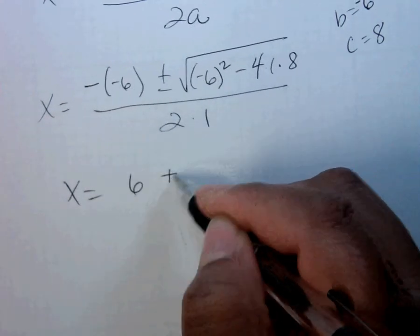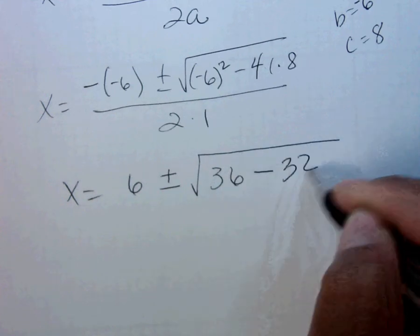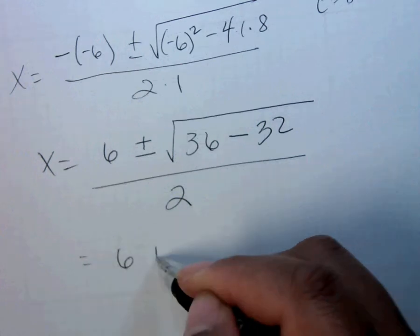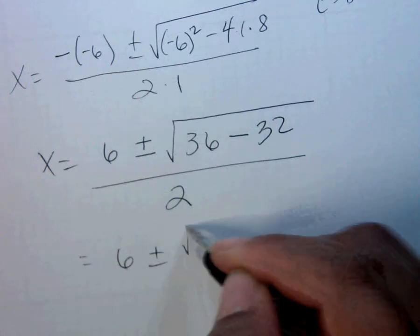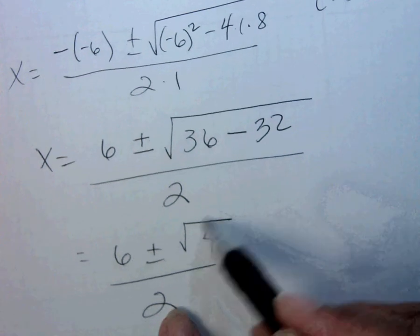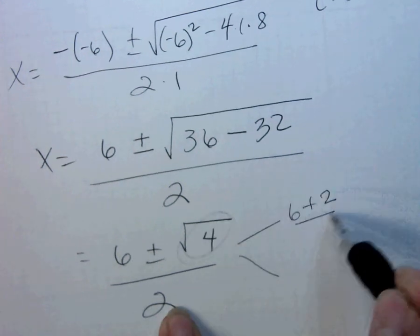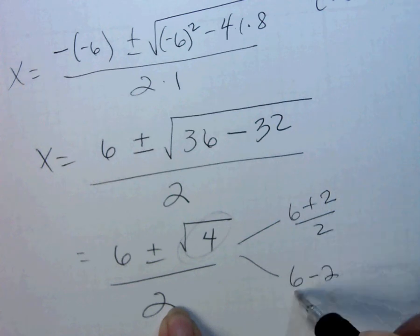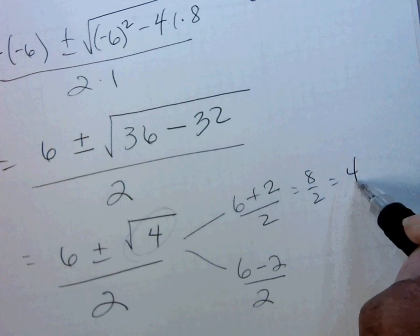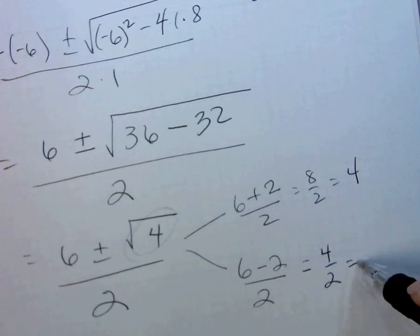that would be 6 plus or minus the square root of 36 minus 32 all over 2, which is 6 plus or minus the square root of 4 over 2, and the square root of 4 becomes 2. So this breaks it into 6 plus 2 over 2, 6 minus 2 over 2, which is 8 over 2, which is 4, and then 4 over 2, which is 2.